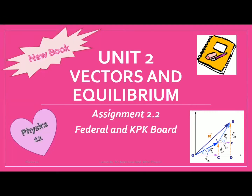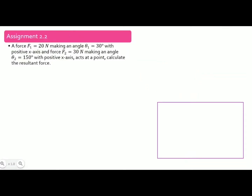Dear students, in today's video we are going to solve Assignment 2.2 of Unit 2, that is Vectors and Equilibrium. Assignment 2.2: a force F1 equals 20 Newton making an angle theta-1 of 30 degrees with the positive x-axis, and force F2 of 30 Newton making an angle theta-2 equals 150 degrees with the positive x-axis, acting at a point. Calculate the resultant force.